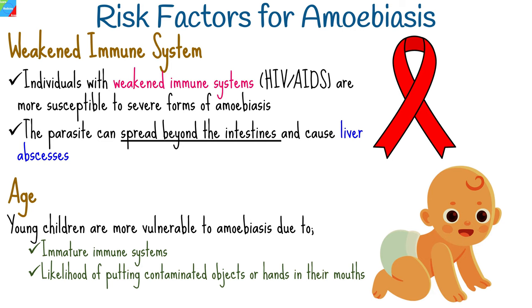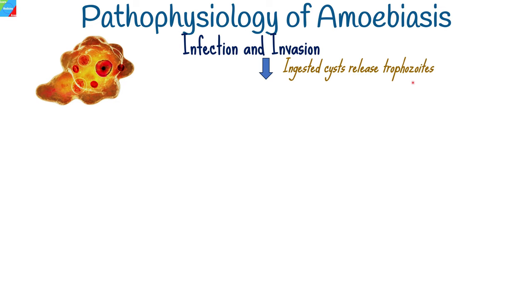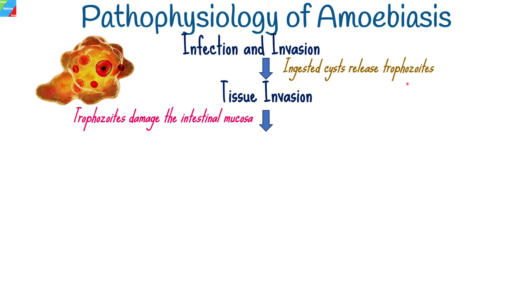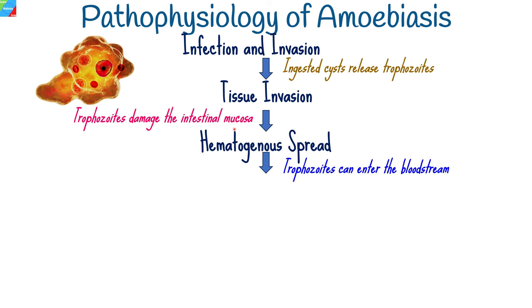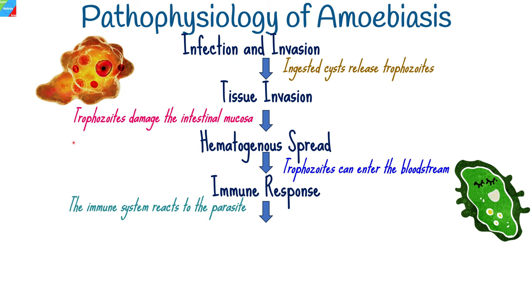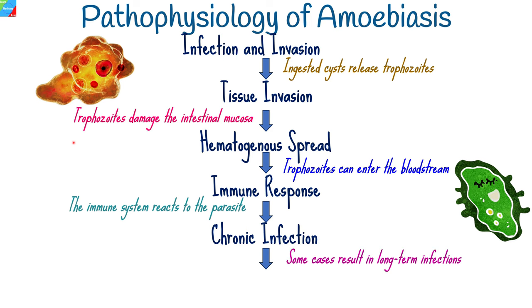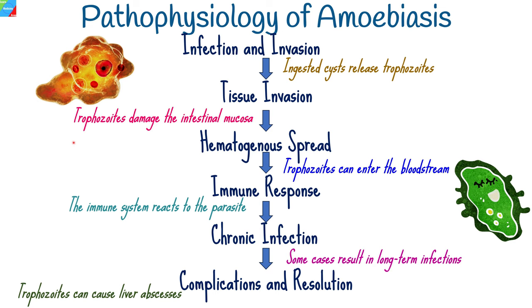Understanding the pathophysiology of amoebiasis is essential for comprehending how this parasite causes disease. Ingested cysts release trophozoites, which invade the intestinal lining, causing symptoms and disease. Trophozoites damage the intestinal mucosa, leading to ulcers, inflammation, abdominal pain, diarrhea, and bloody stools. They can also enter the bloodstream, often reaching the liver and forming abscesses, causing severe symptoms. The immune system reacts to the parasite but may not eliminate it entirely, leading to persistence or chronic infection — either symptomatic or asymptomatic. Trophozoites can cause liver abscesses and rarely affect other organs. Treatment can resolve amoebiasis and provide partial immunity against reinfection, though not always complete or long-lasting.